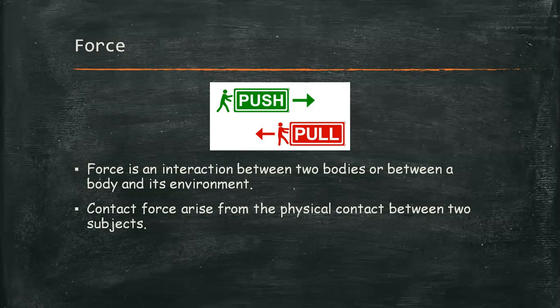Second, we have the friction force exerted on an object by any surface. It acts parallel to the surface in a direction that opposes sliding. And the pulling force exerted by a stretched rope or cord on an object which is attached is called tension force.